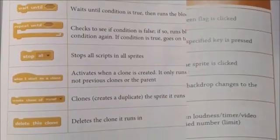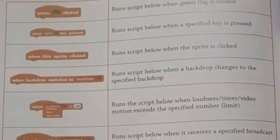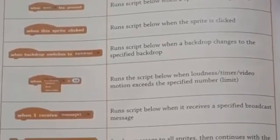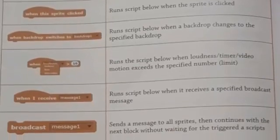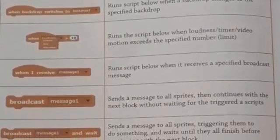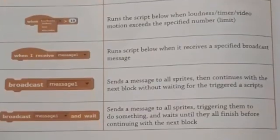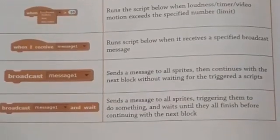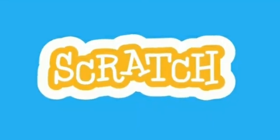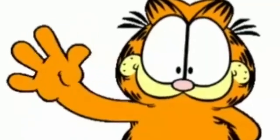The events block specifies events for animation and gives instructions to start the animation. Some instructions include when the sprite is clicked, when flag is clicked, when space key is pressed, and more. So children, now you can plan your story or game and try to animate using Scratch. Till then, bye bye.